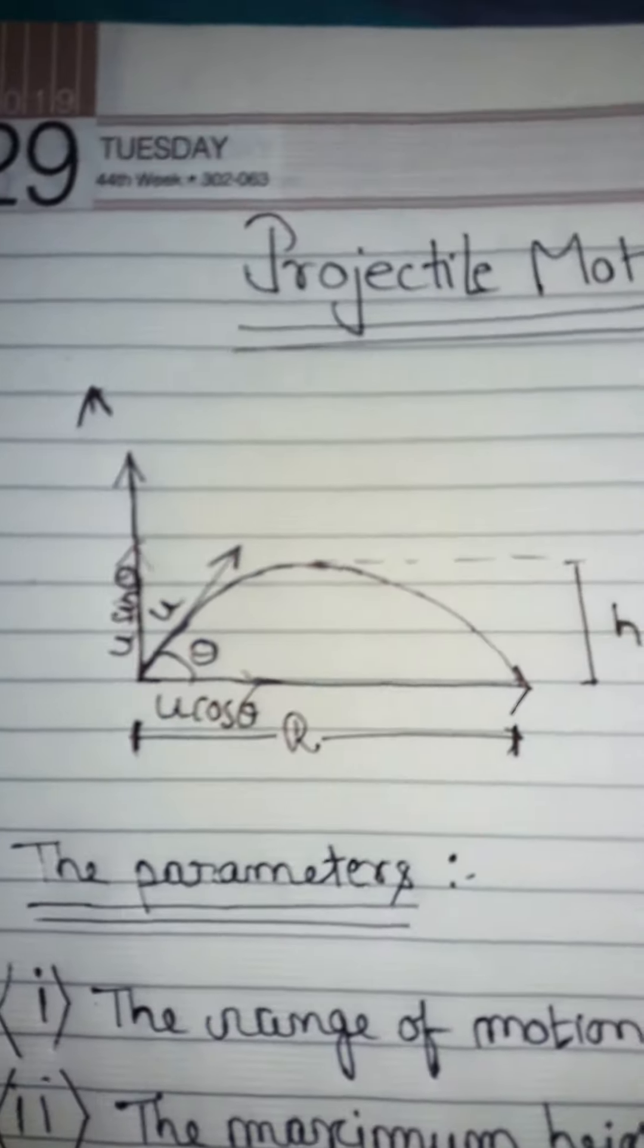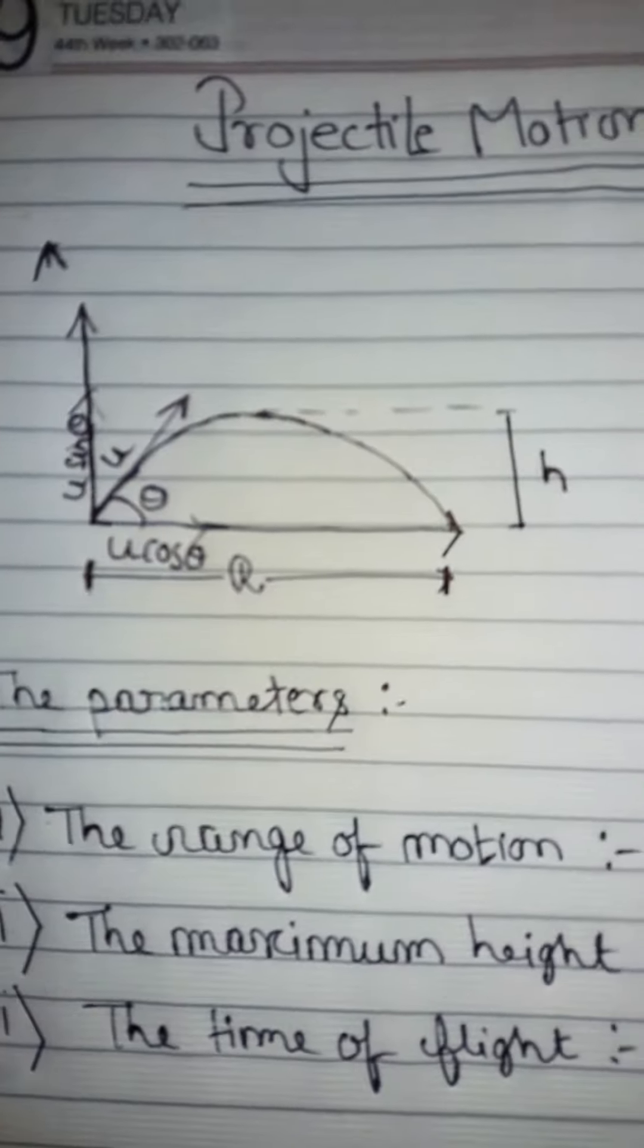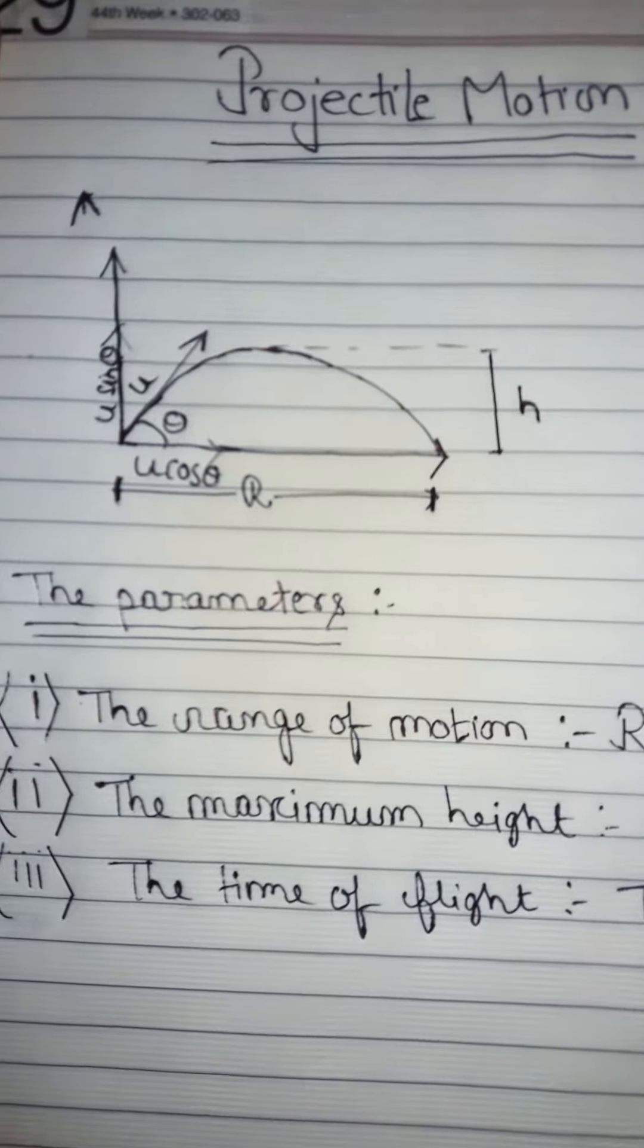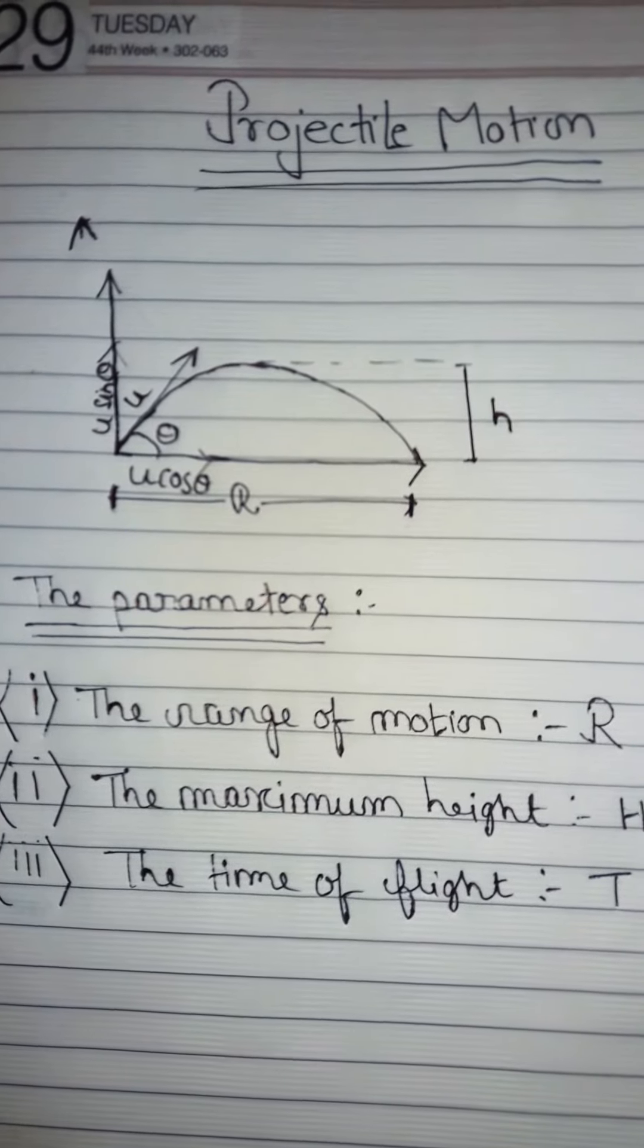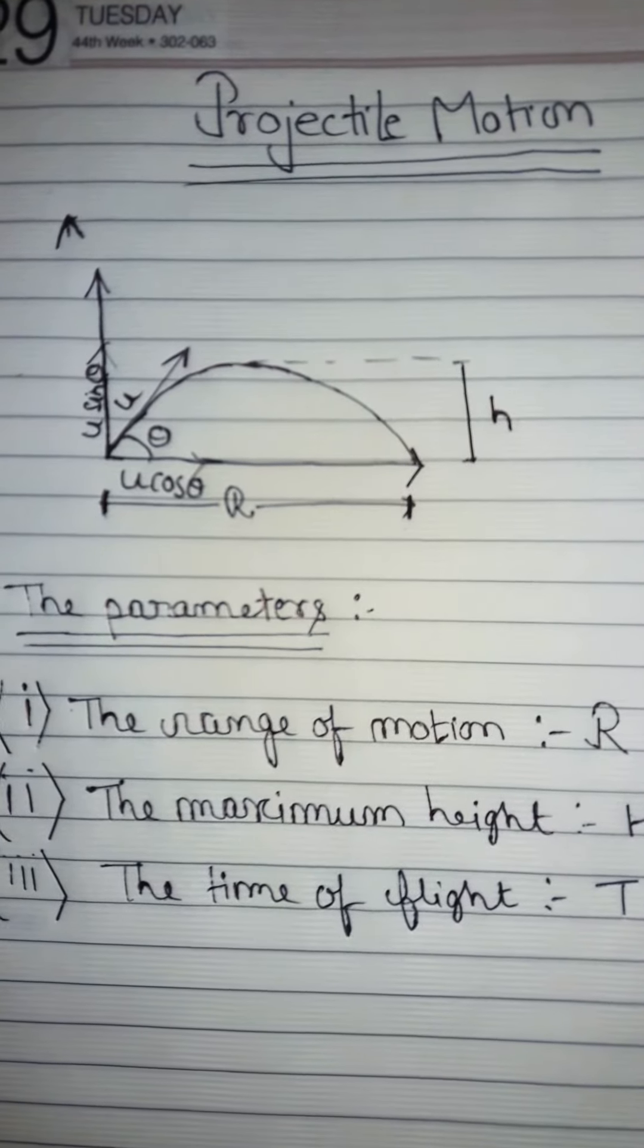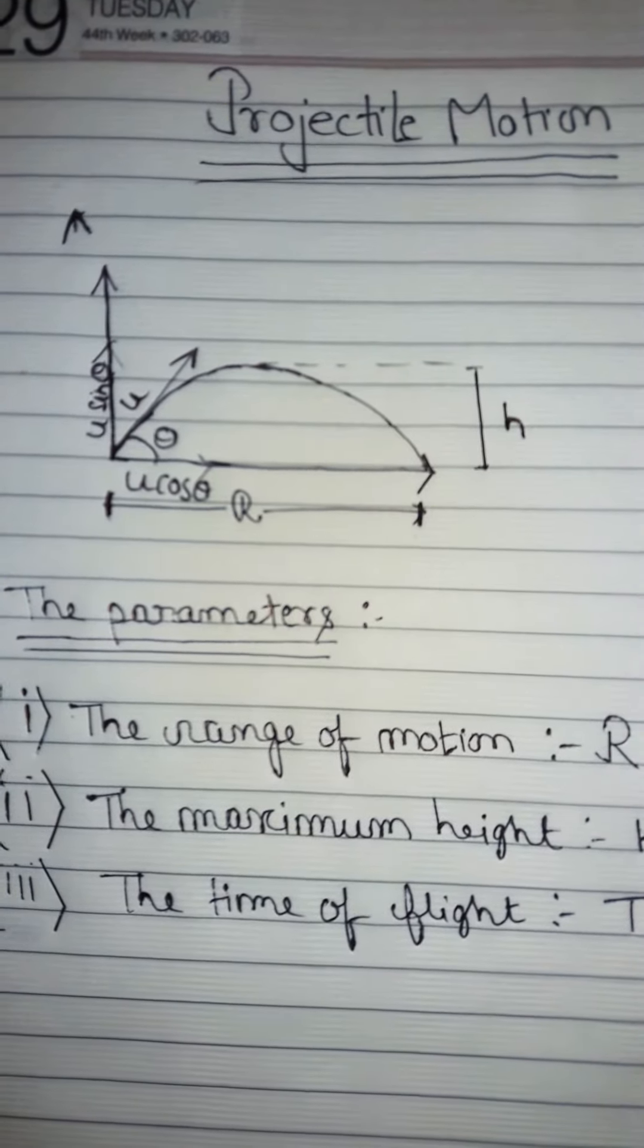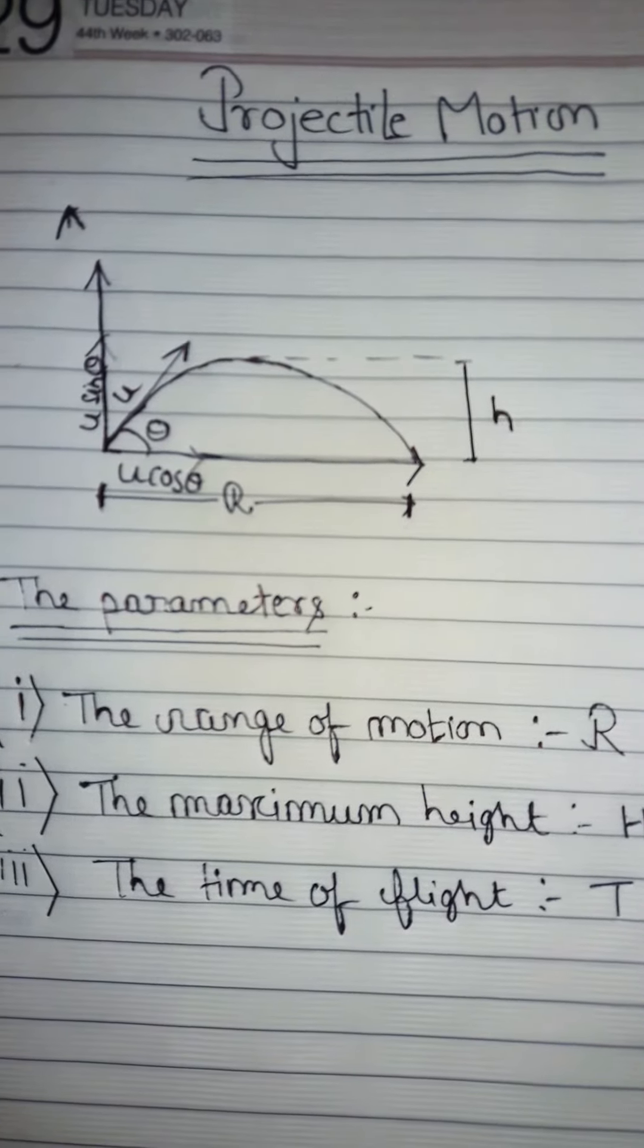Now we'll discuss those parameters. The first one is the range of motion R, which is the maximum distance the projectile covers in the x-direction. The second one is the maximum height H...